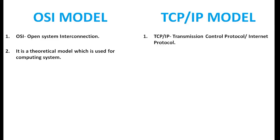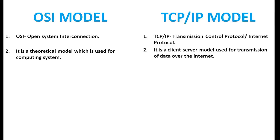OSI model is a theoretical model which is used for computing systems. Whereas TCP IP model is a client-server model used for transmission of data over the internet.